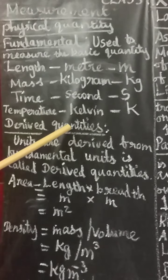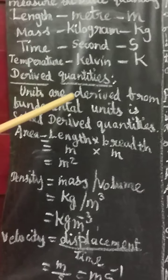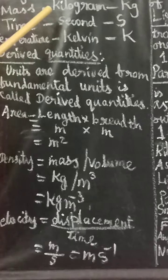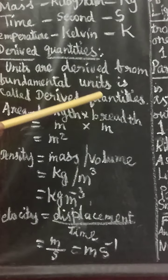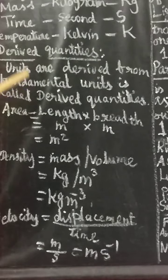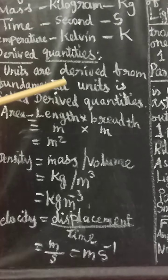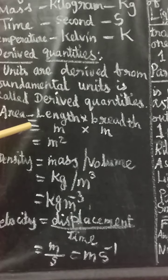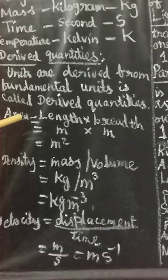The next type is derived quantities. Derived quantities are units derived from fundamental units. In other words, derived quantities are quantities whose units are derived from fundamental quantities.